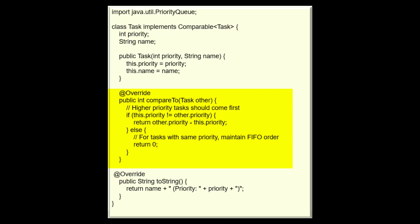Inside the method, it compares the priority of the two tasks using this.priority, which is the priority of the current task, and other.priority, which is the priority of the other task. If this priority is not equal to the other priority, meaning the priorities are different, it will return a positive integer indicating that the other task should come before this current task.